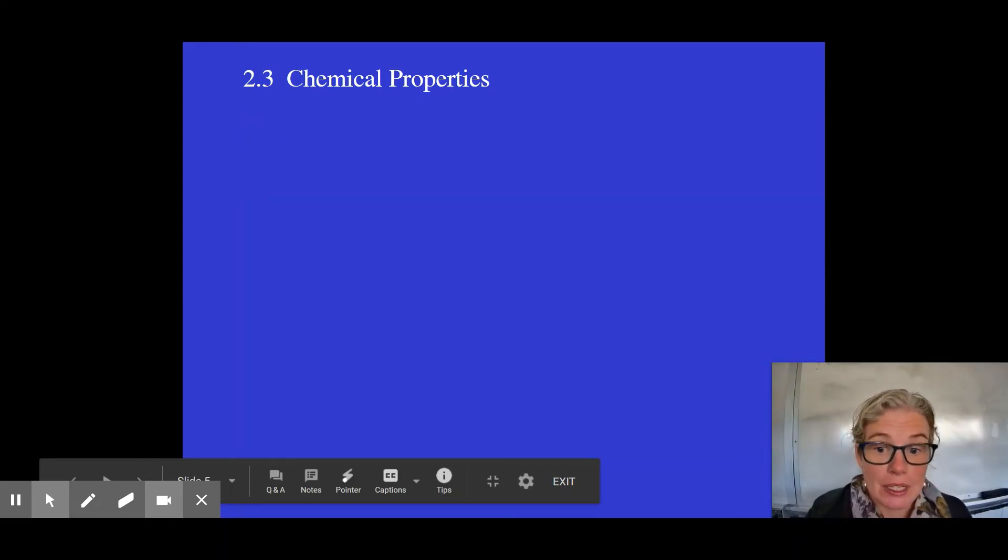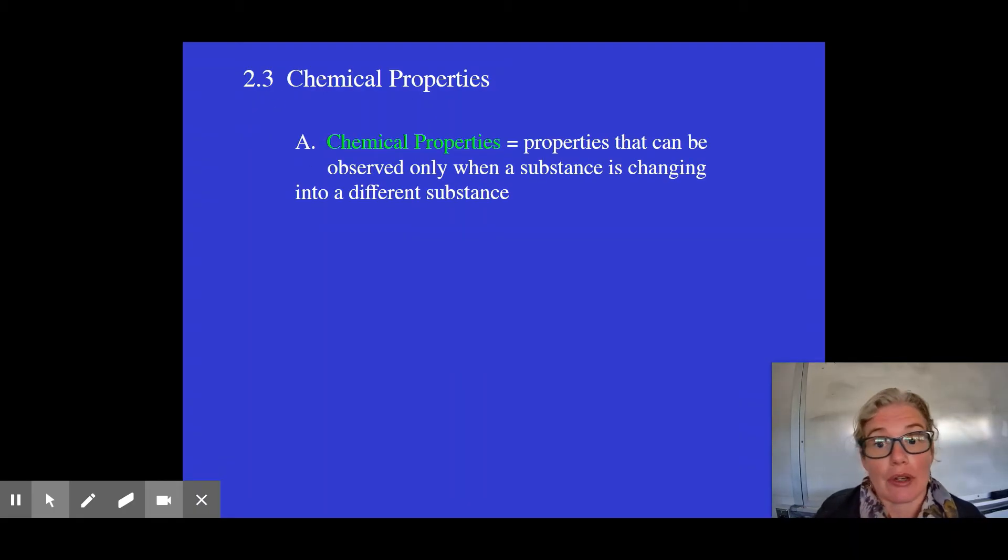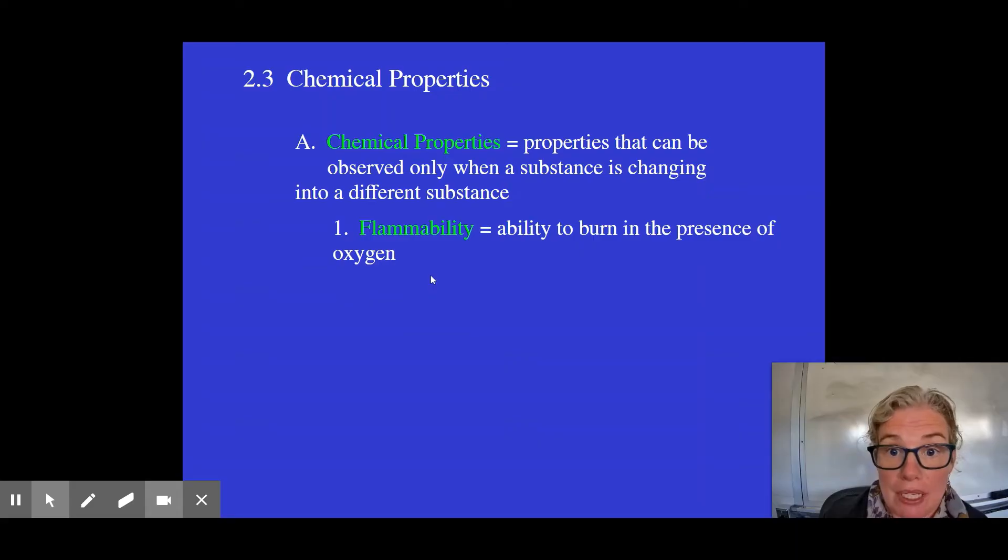A physical property can be observed without changing the substance. A chemical property, by the time you've observed it, has gone through a chemical change and become something new. It can only be observed while it's in the process of changing into something new with new properties.